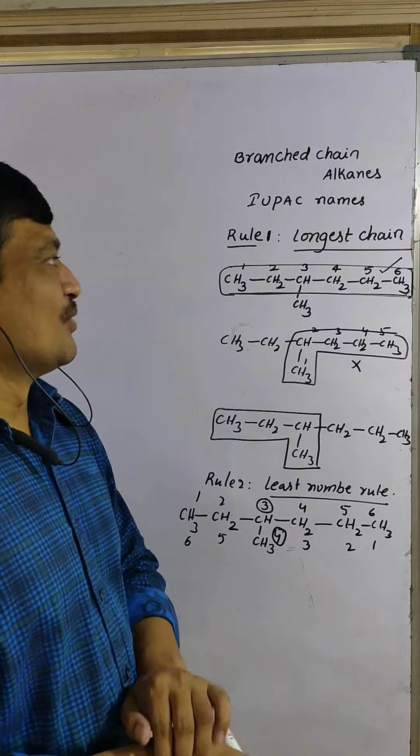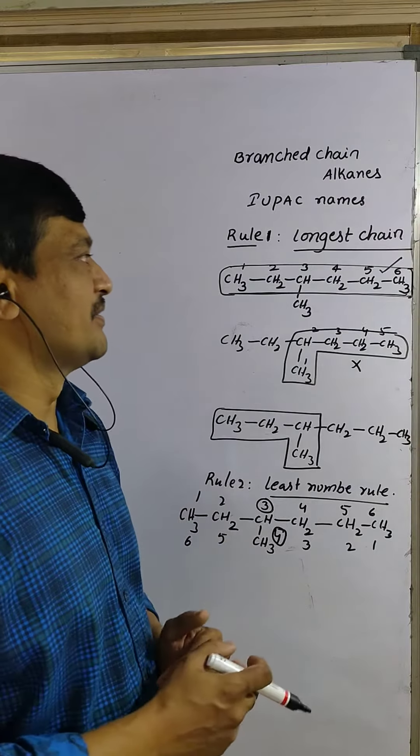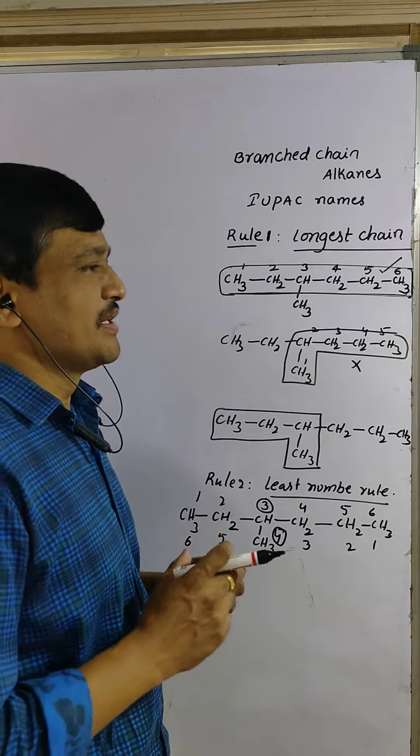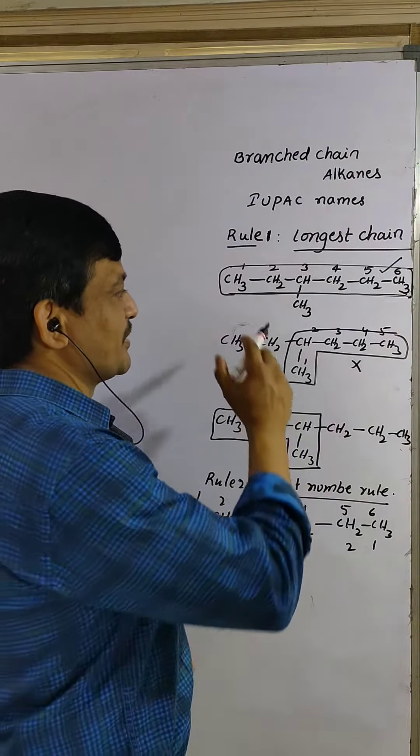Longest chain rule, rule number one. First you have to select the longest one. That means that chain contains more number of carbons.